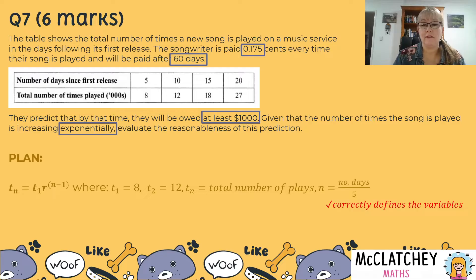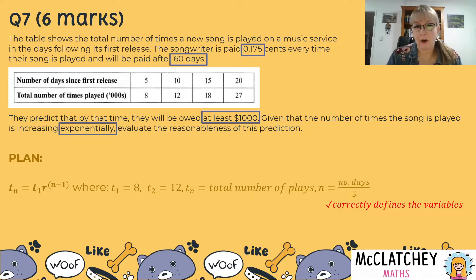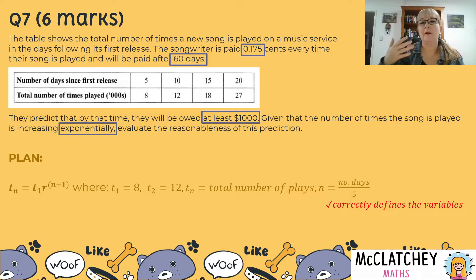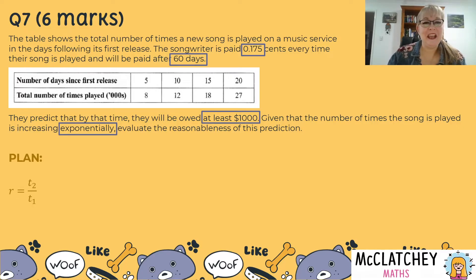In our equation, t_n is the nth term — the total number of plays — and n is the number of days divided by 5. Term one is 8, at day 5: 5 divided by 5 gives t_1. We do this because on day 60 we need to know which term that is: counting 5, 10, 15... up to 60 uses 12 steps, so n = 60 ÷ 5 = 12. The common ratio is term 2 divided by term 1: 12 ÷ 8 = 1.5, and correctly identifying that earns the next mark.